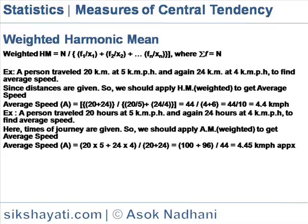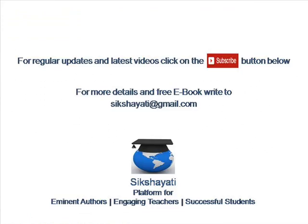Another example: a person travelled 24 hours at 5 kmph and again 24 hours at 4 kmph, to find average speed. Here, the times of journey are given, so we should apply weighted HM. Average speed is equal to (20×5 + 24×4) / (20 + 24) = (100 + 96) / 44 = 4.45 kmph.